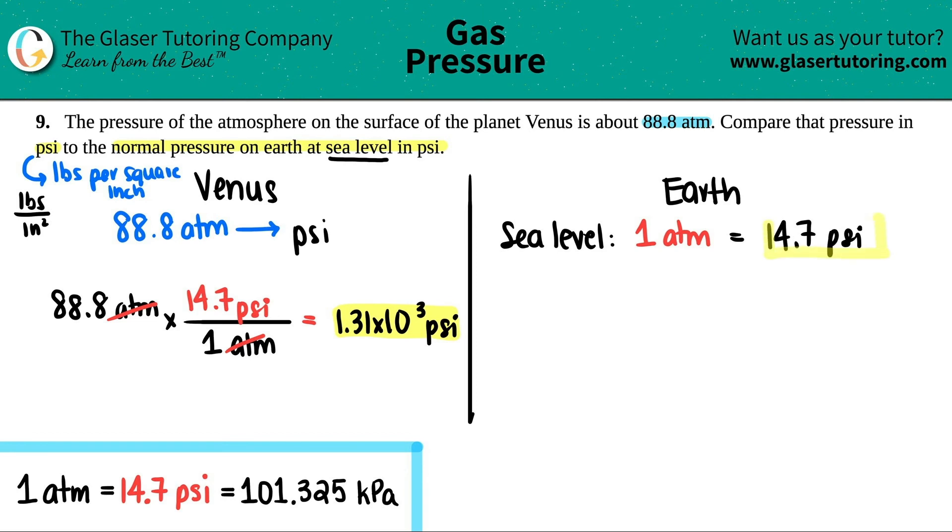Now they say compare the pressure, but look at the number difference. You could even see it with the ATM. If sea level on the surface close to the water is one ATM on earth, and on Venus is 88.8 ATM.